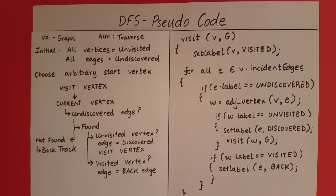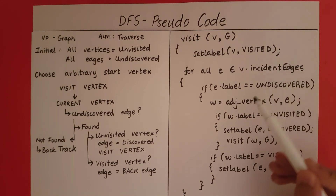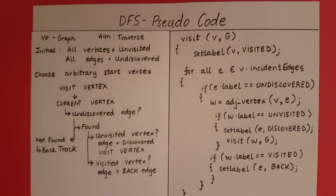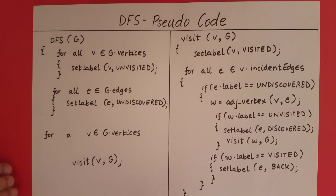You might ask how closing the function achieves backtracking. Suppose we are at vertex A and we call visit on vertex B. When the function for B completes, the flow of control returns to the line where it was called — which is inside visit(A), essentially backtracking to the parent. Since when a function completes the flow of control goes back to the calling function, we have effectively backtracked to the parent. This will be clearer when we see an example.